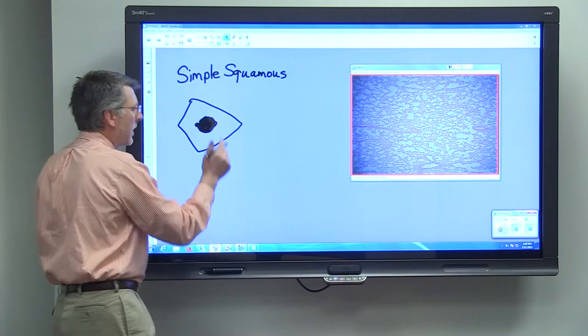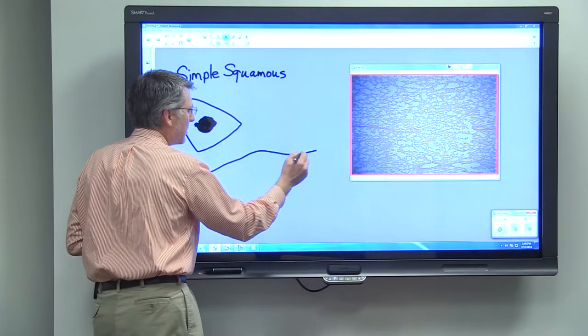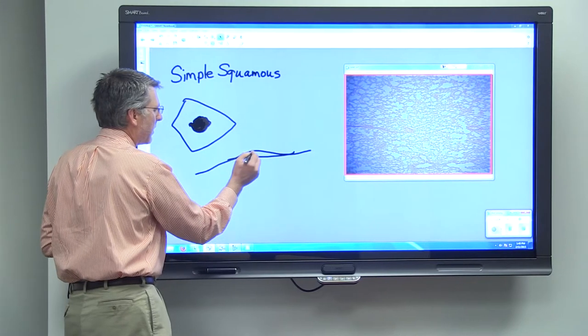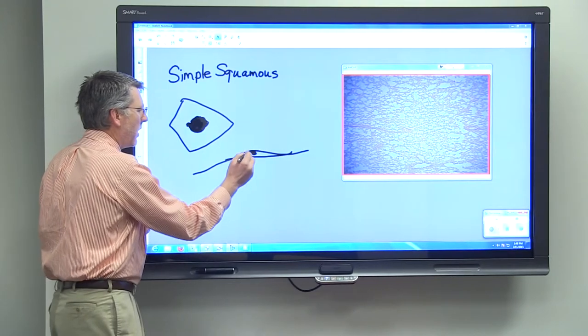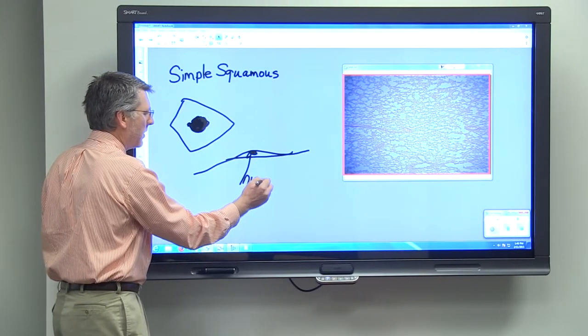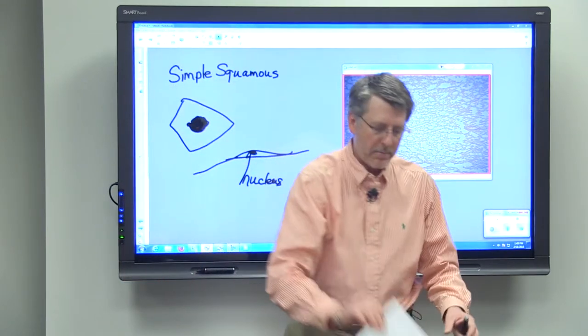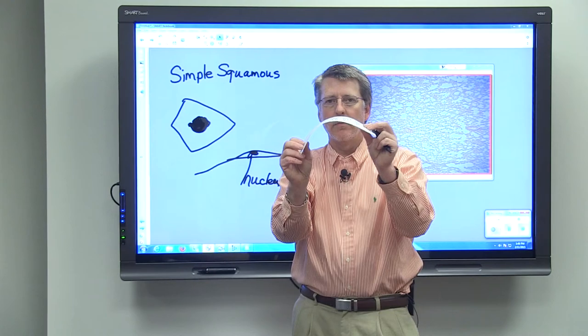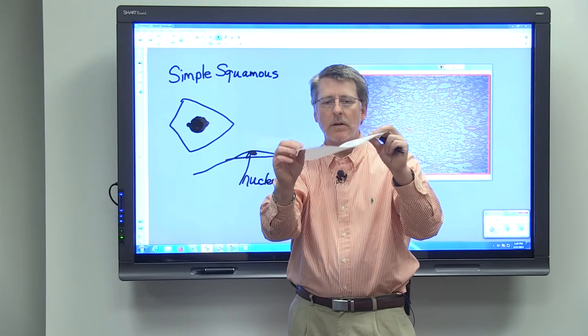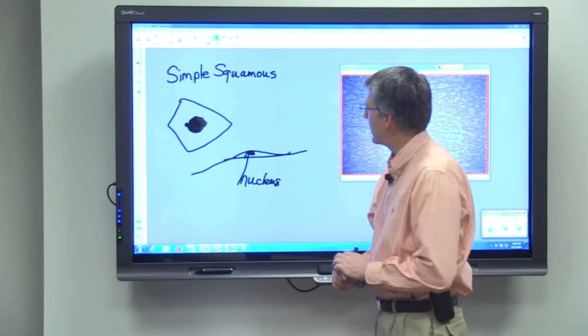But if we wanted to look at it in cross section or look at the edge of that cell, it would look something like this. This would be the nucleus of the cell. Picture this piece of paper with something a little bigger than a golf ball attached to it and that would be similar to a simple squamous epithelial cell.